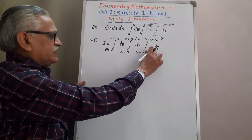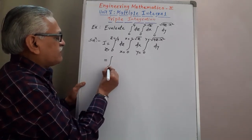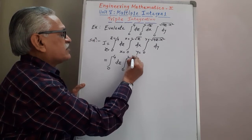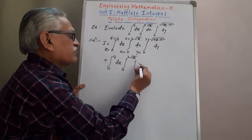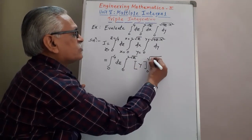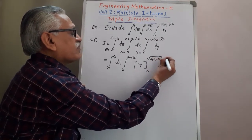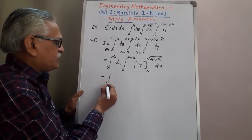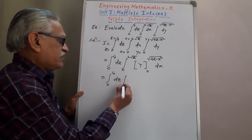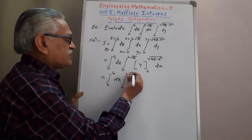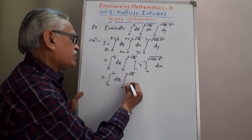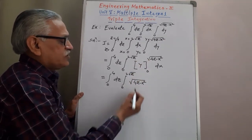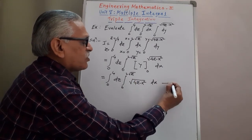Performing the first integral and keeping the outer integrals as they are: integral from 0 to 4 dZ, integral from 0 to 2 root Z. The integration of dY is Y, evaluated with the upper limit root of (4Z minus X squared) and lower limit 0. Substituting the limits, it remains root of (4Z minus X squared). We then integrate with respect to X. We call this equation 1.